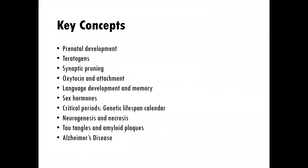In this week's content, we're going to explore prenatal development — what's happening not just during infancy, but also before a baby is even born, in terms of their brain and their body. We'll also learn about teratogens, which weren't touched on as much in the text. Teratogens are essentially toxins that can affect prenatal development.